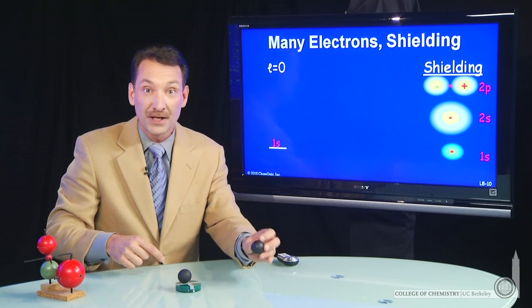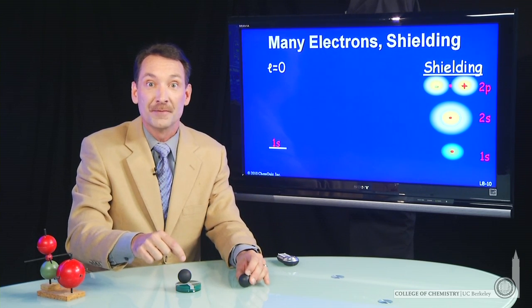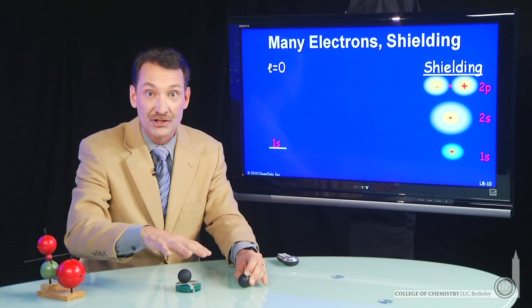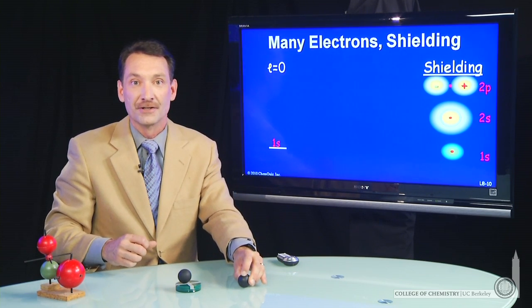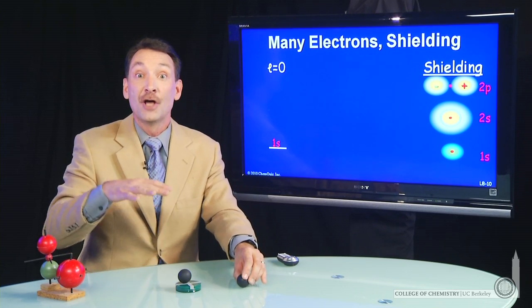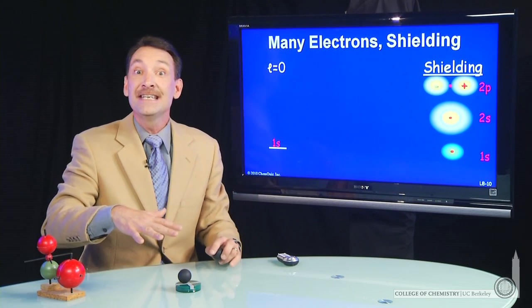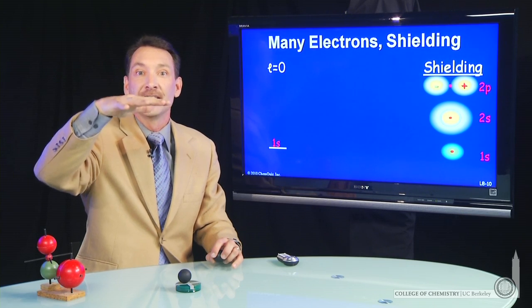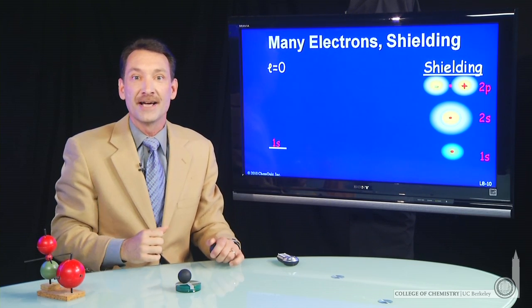rather than seeing a full plus 2, the inner electron shields some of that. And it'll see more like maybe just a plus 1-ish effective nuclear charge. So if it sees a lower nuclear charge, it's easier to ionize. Its energy state is raised.